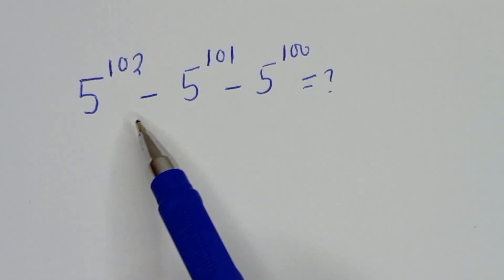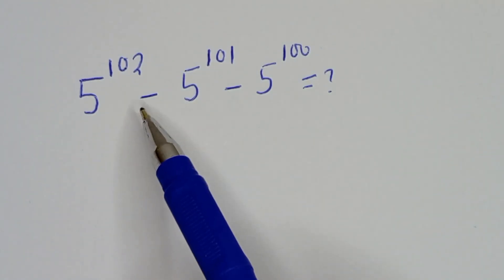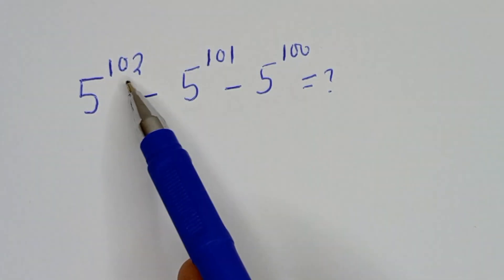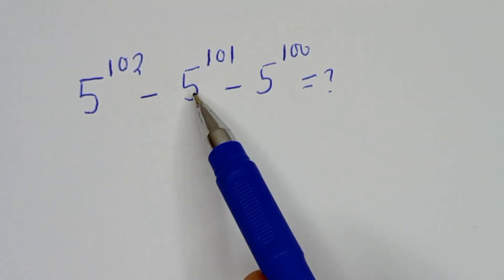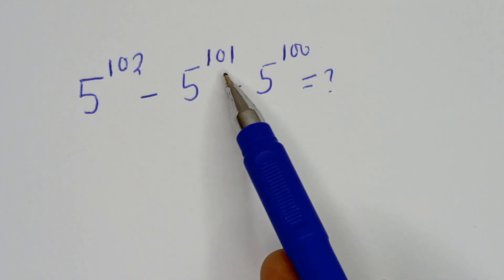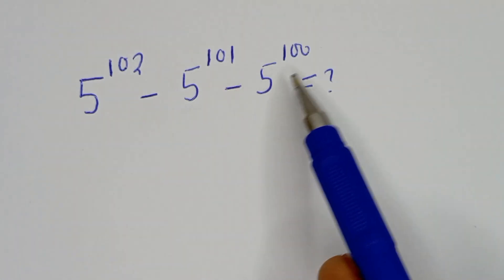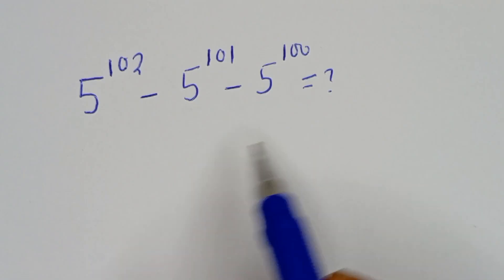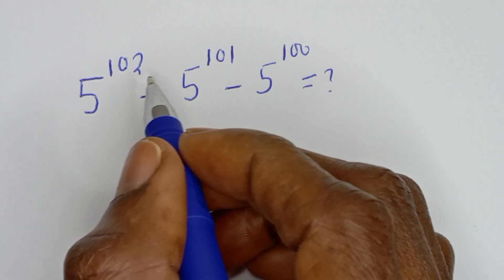Hello, how to simplify this nice exponent problem? 5 to the power of 102 minus 5 to the power of 101 minus 5 to the power of 100 is equal to what?